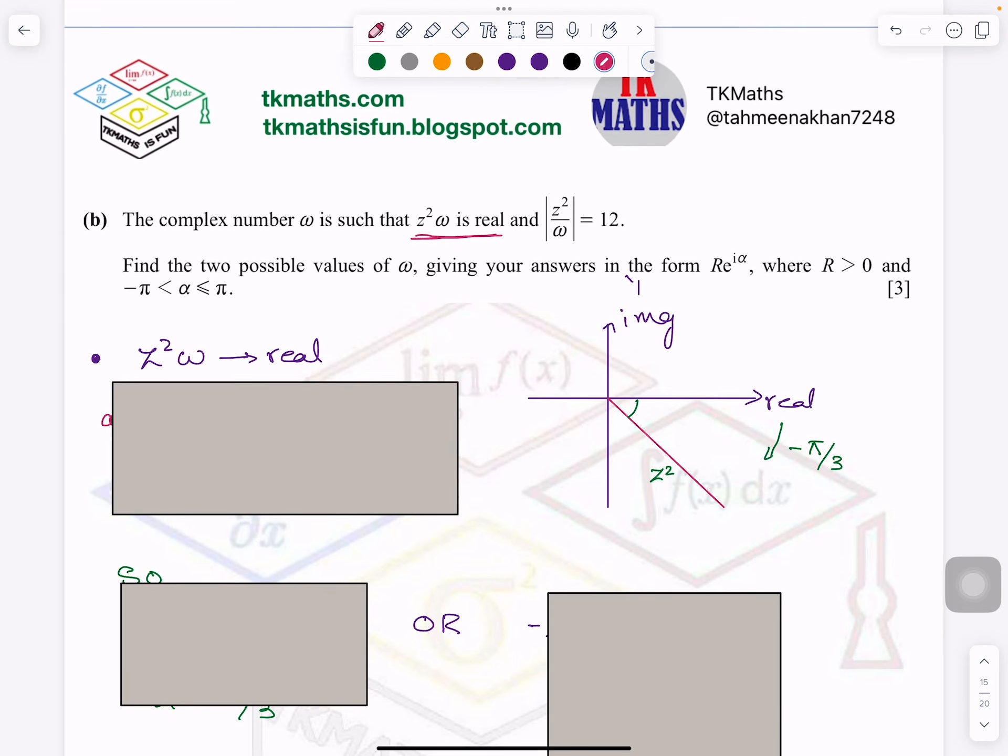So now if you see, when I am saying it is real, it means answer of this is on this line. Because this is my line for real number. So it means when you multiply them, when you add them, add the angles, so it will be on the real axis. So what does it mean? Argument of Z square plus argument of ω equals 0 or minus π. Now why did I write minus π? Why not π?